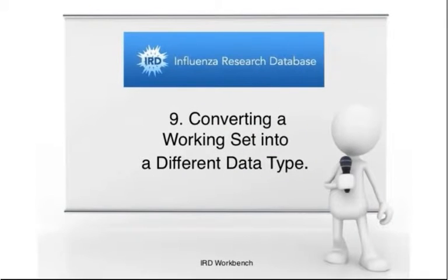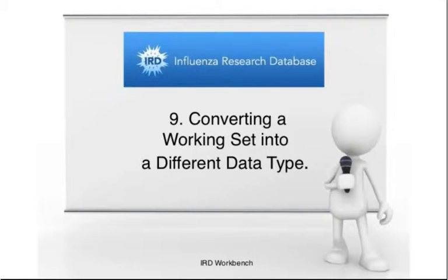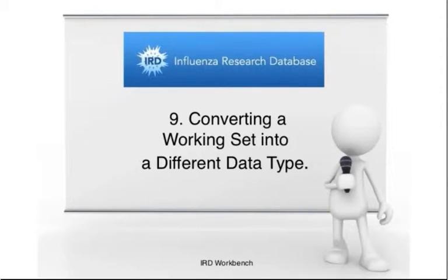Converting a working set into a different data type. If you have a saved working set, you can change the data type that is associated with it. For example, if you've done some analysis on a working set of nucleotide sequences, and now you want to analyze the same strains on the amino acid sequence level, you can easily convert your working set of nucleotide sequences into a working set of protein sequences.